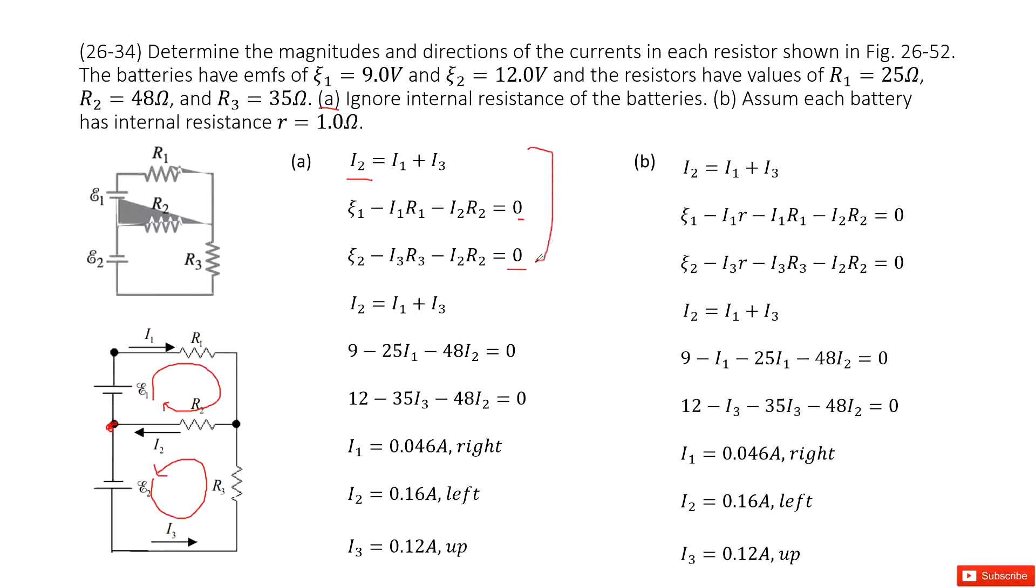Now we have these three equations. When we input the given quantities, it looks like this way. We have three unknown quantities and three equations. You can solve these equations, get the quantities for I1, I2, I3, here.